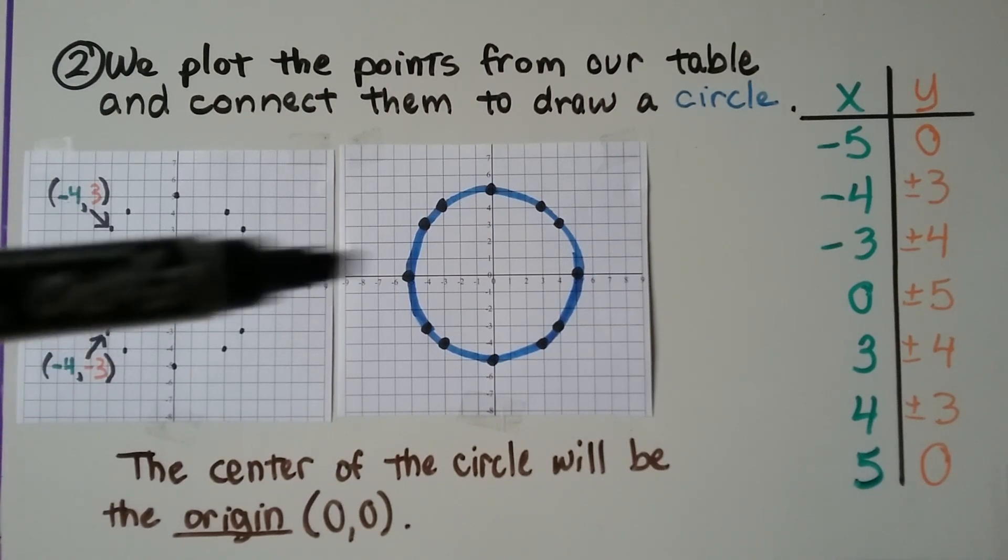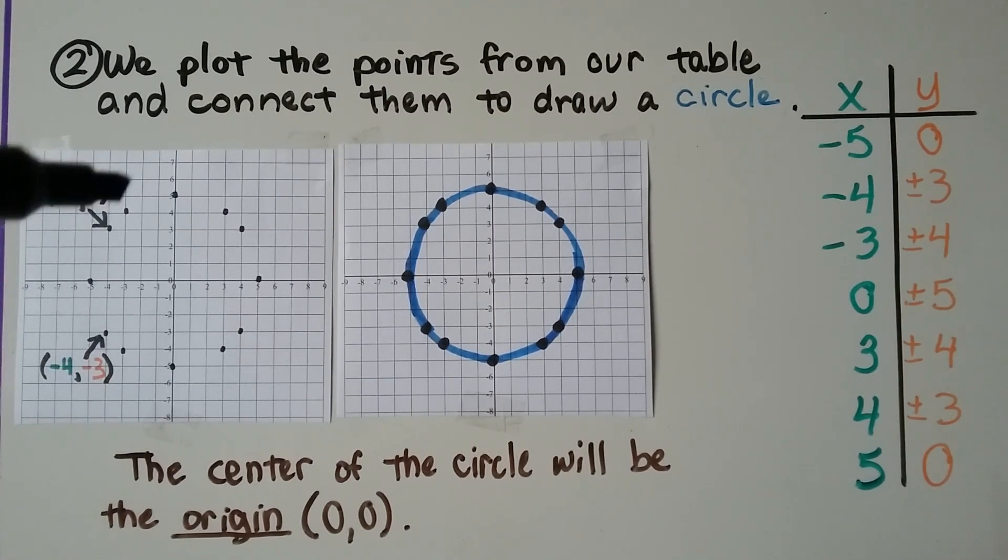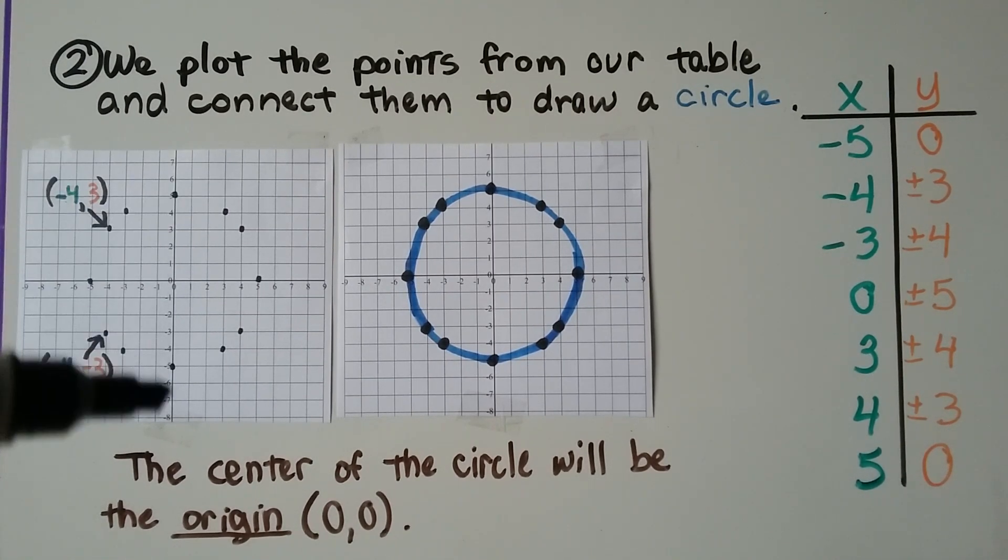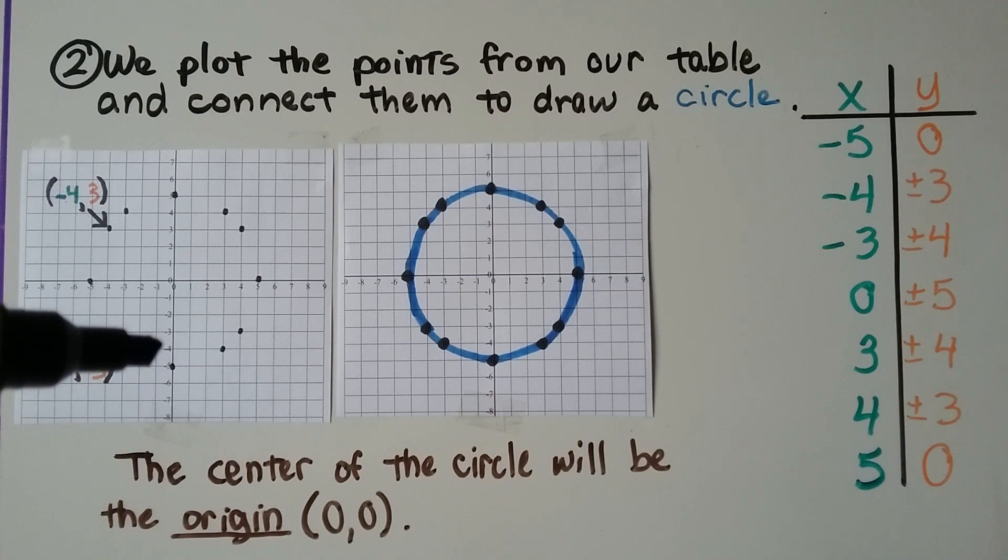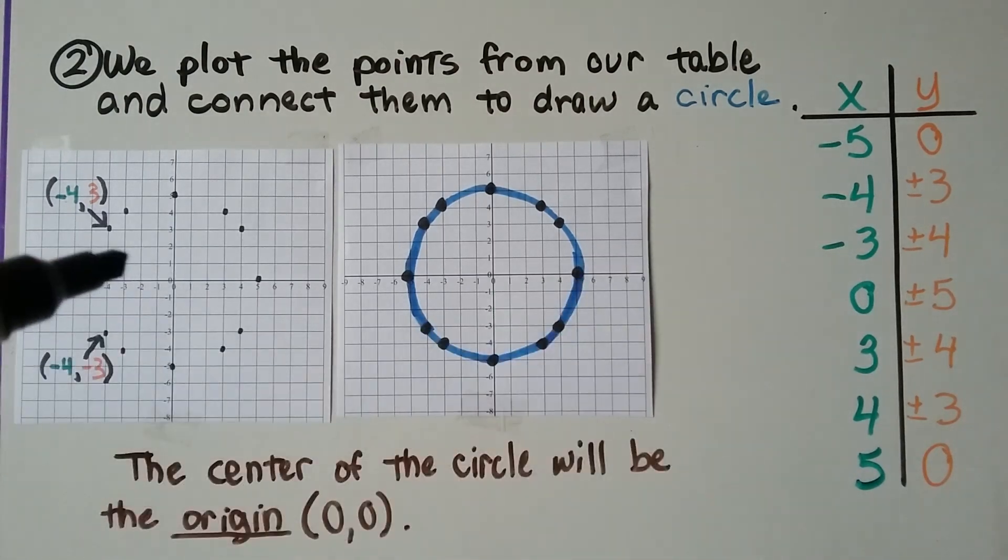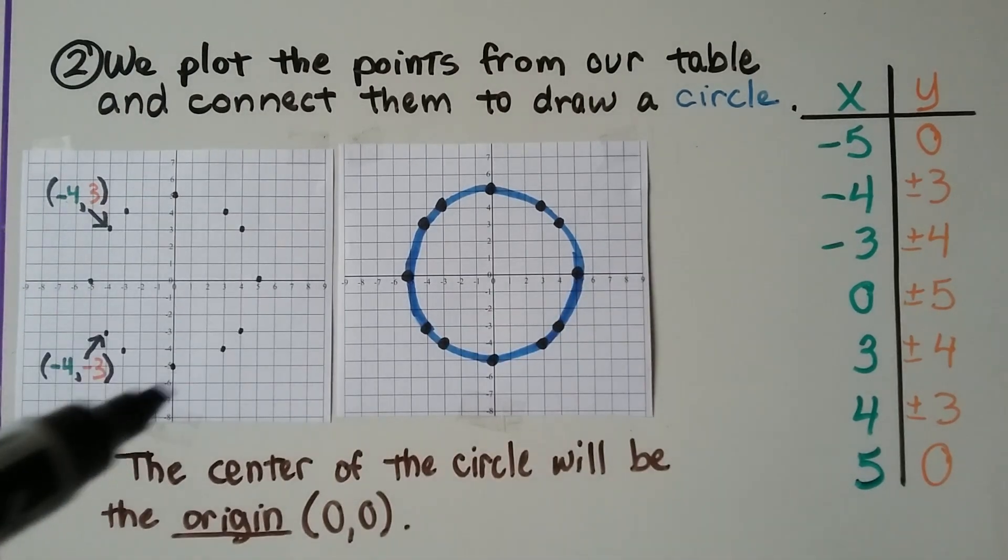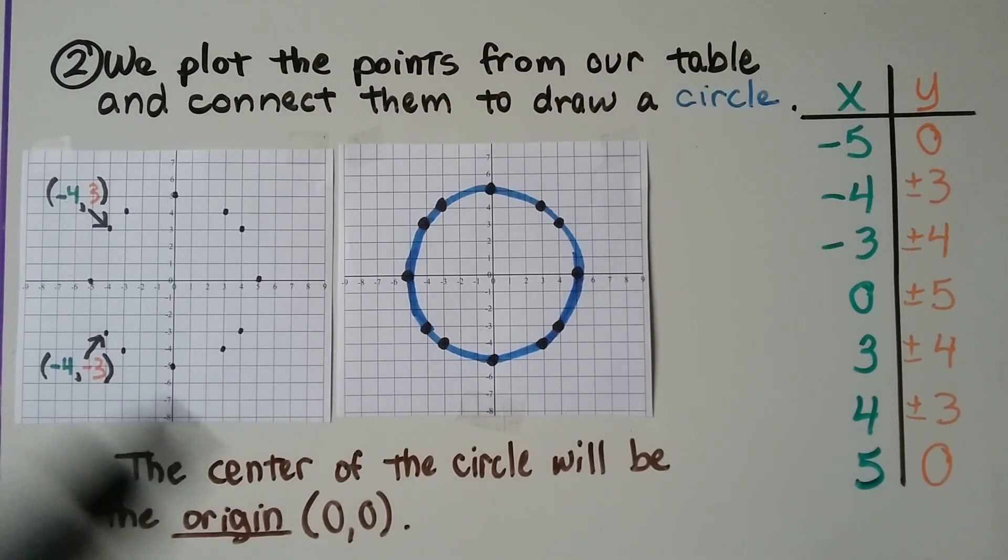We do the same thing for the next one. We plot both negative and positive y values, both negative and positive y values, to whatever the x is. And once we have these points plotted, we can just connect them to draw our circle. And the center of the circle will be the origin, 0, 0.